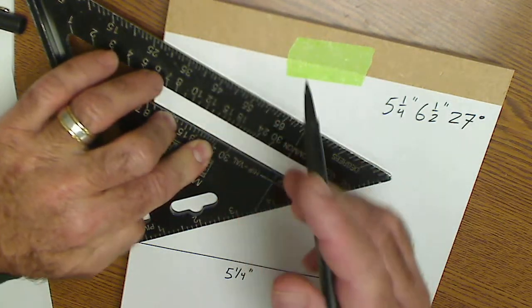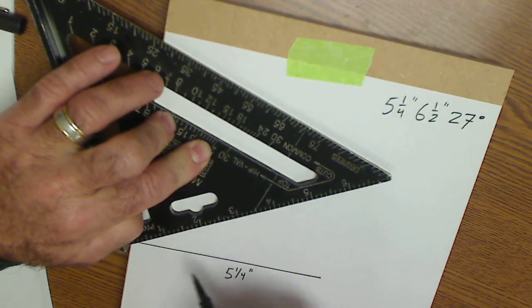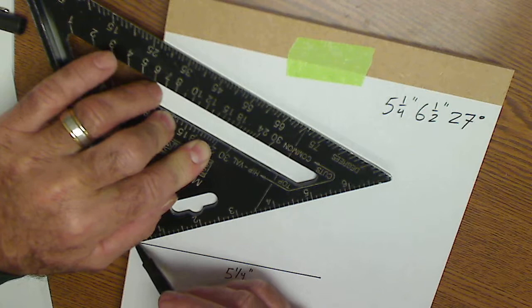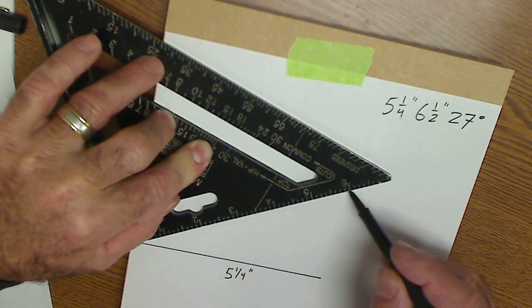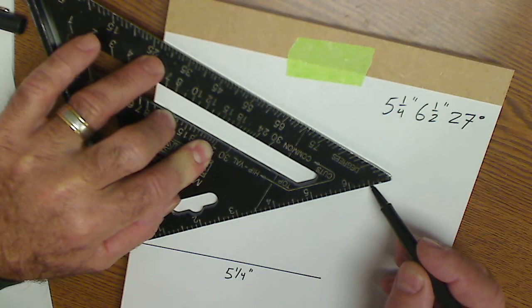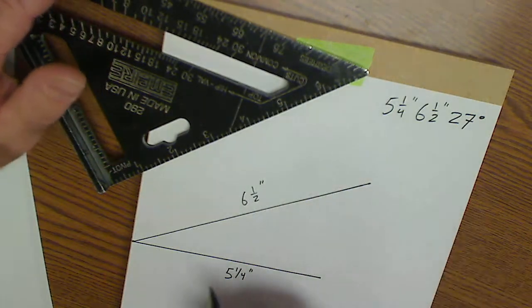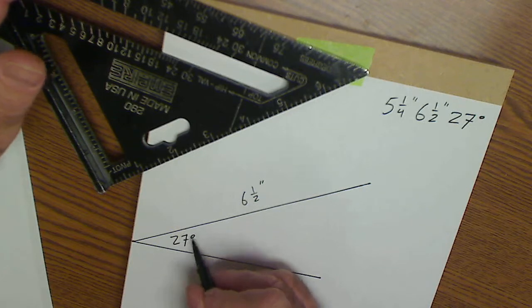I set it there, I hold it firmly, and I want to go 6 and 1/2 inches. Whoops. 27 degrees. And I go 6 and 1/2 inches. So this is my 6 and 1/2 inch line. This is my 27-degree line.